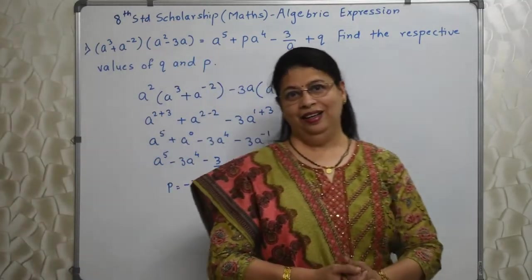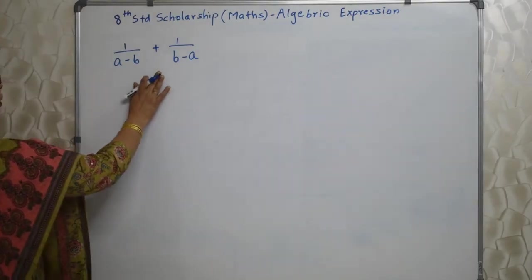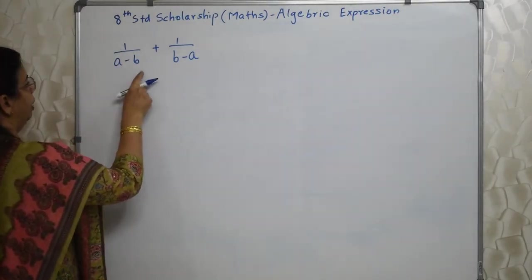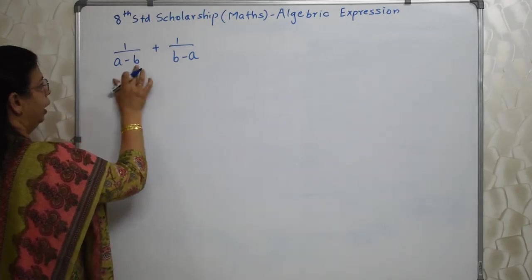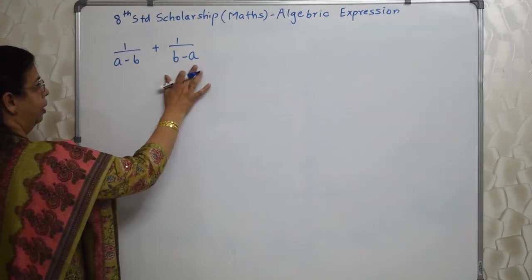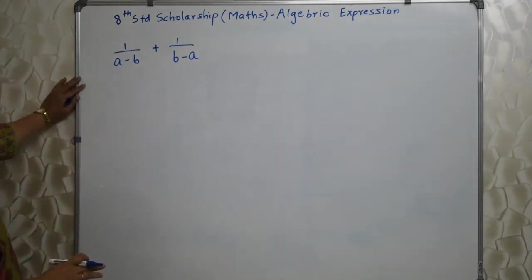Interesting. Let's move ahead. Next sum I have written on the board. 1 upon A minus B, 1 upon B minus A. They are totally different. Here A plus hai, either minus hai. They are totally different. So we need to find out the LCM. Very easy.